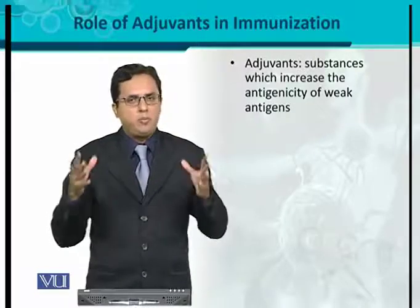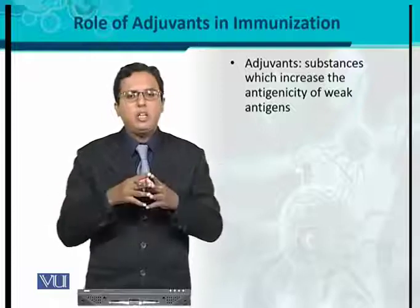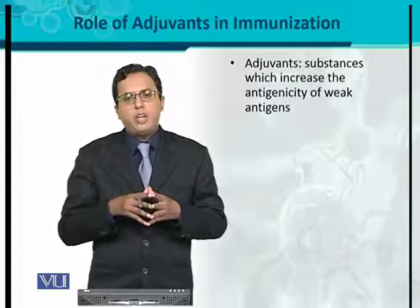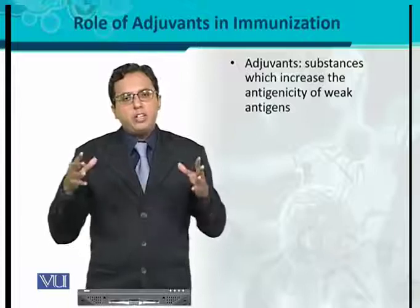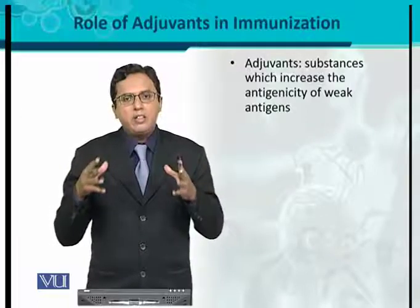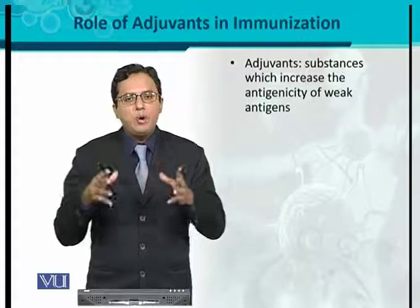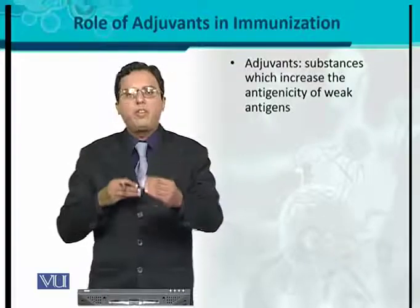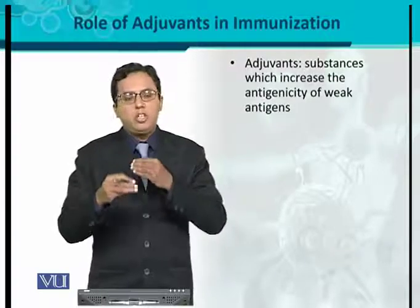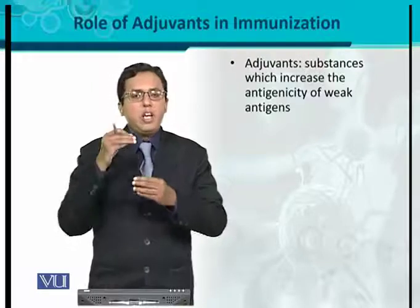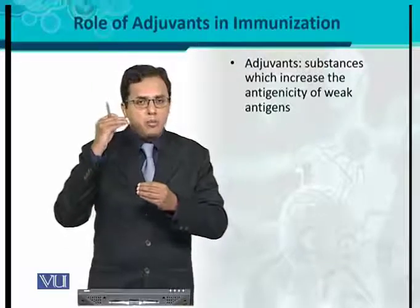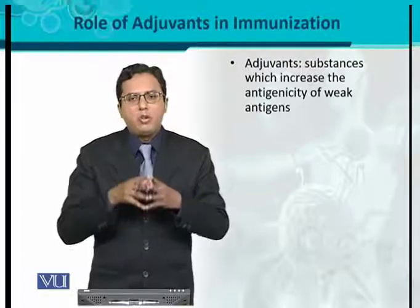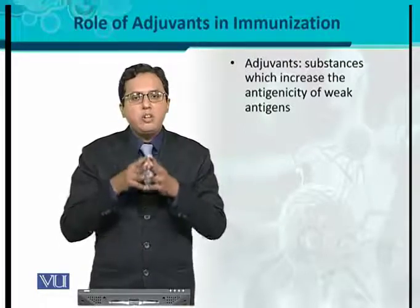Antigens can be introduced in different forms: they can be killed, live attenuated, or subunit. Some antigens have low antigenicity — meaning a low ability to cause activation of the immune system, or to interact with the products of the immune system. So the question is: how can we increase that antigenicity?